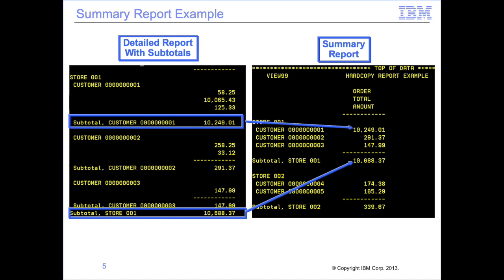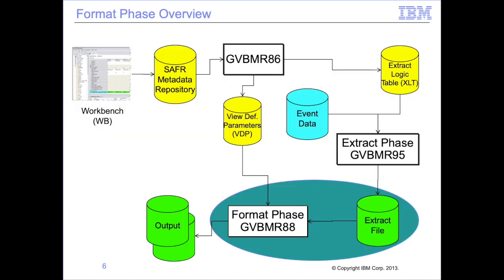To perform these functions, the format phase engine GBB MR88 is required. Extracted data is passed in a specialized format called the SAF, or standard extract file, from the extract phase to the format phase. Creating this format requires unique logic table functions in the extract phase.